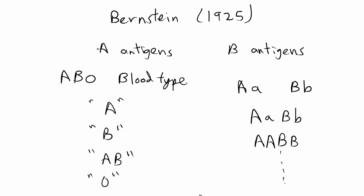The more common type of blood test is based on observed phenotype instead of DNA genotyping. There are things called A antigens and B antigens on your red blood cells. Based on your blood type, your blood can react to the A antigen, the B antigen, both antigens, or neither. Based on how your blood reacts to these antigens, you can be four different phenotypes: blood type A, B, AB, or O.